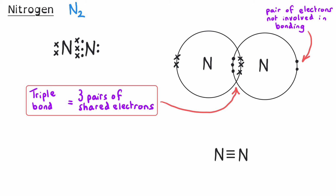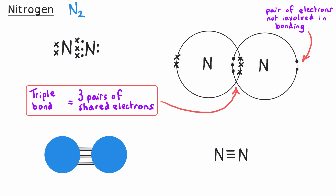When drawing the displayed formula of a triple bond, we use three lines between the nitrogen atoms. The ball and stick diagram uses blue circles to represent nitrogen, connected by three sticks representing those three shared pairs of electrons in the triple bond.